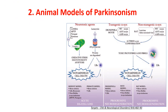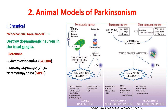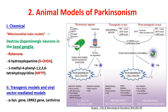The second model is Parkinsonism, with two methods. First, the chemical method using a mitochondrial toxin model to destroy dopaminergic neurons in the basal ganglia. Notable toxins include rotenone, 6-hydroxydopamine (6-OHDA), and MPTP. There is also a transgenic model and a viral vector-mediated model — transgenic examples include alpha-synuclein gene models, and non-transgenic include lentivirus-mediated models.